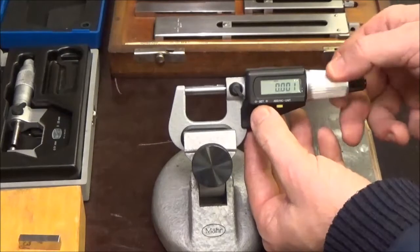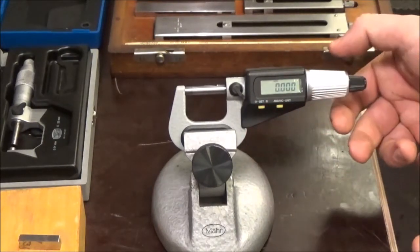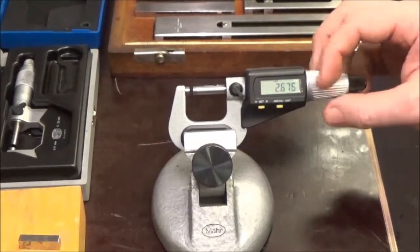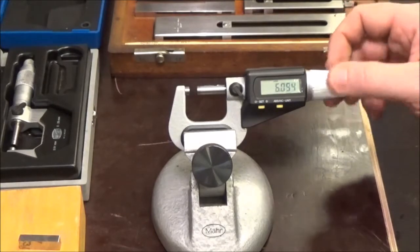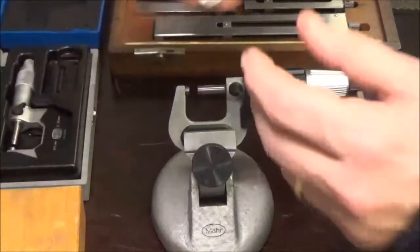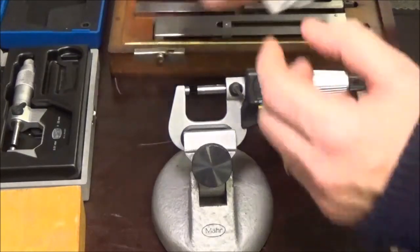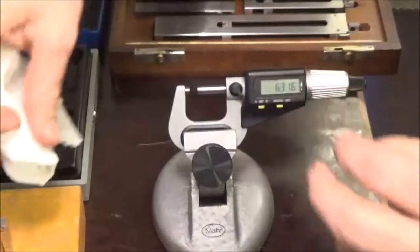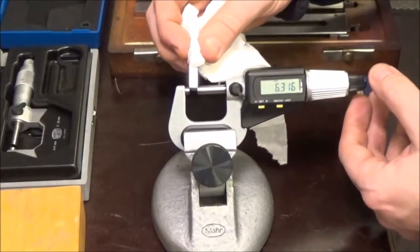It's returned to zero nicely. Let's see if we can get a 6mm reading. I'll be pedantic and grab the gauge block with a bit of paper so we don't get thermal transfer. Last thing I want to do is drop this.